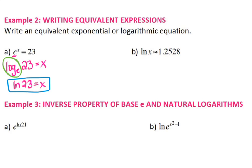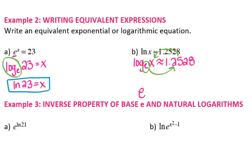For letter b, we're starting with logarithmic form and changing it to exponential. Natural log is the same thing as a log base e, and the squiggly equal sign means approximately equal to. So I have log base e of x is approximately equal to 1.2528. I'm going to change this to exponential form — starting with your base, swing across, there's your exponent, swing back across, and that's what it equals. So I have e to the 1.2528 equals x. You're not evaluating these, so you're just changing the form.